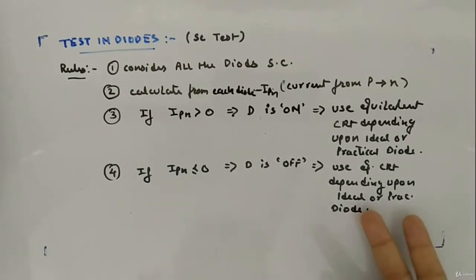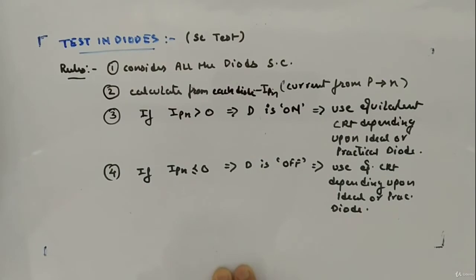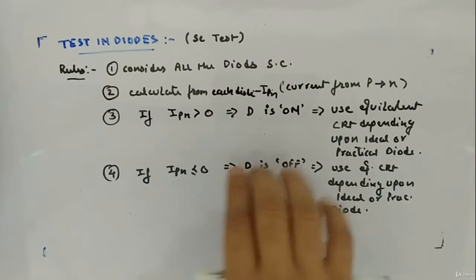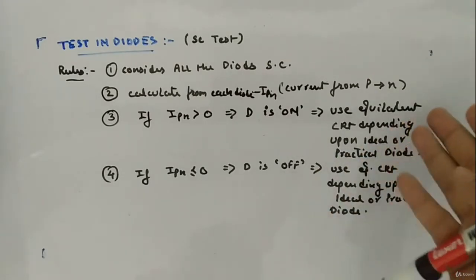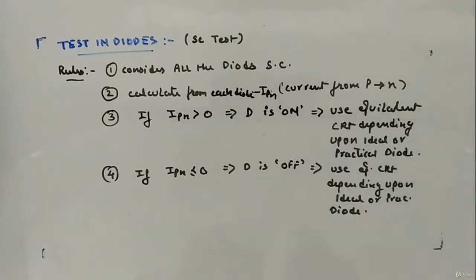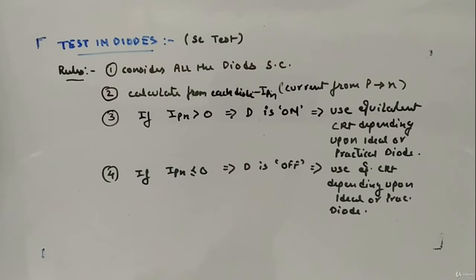If I_PN is less than or equal to 0, the diode is off, and you use the equivalent circuit for an off diode, depending on whether it is ideal or practical. So you assume all diodes are short, calculate the current through them — if greater than 0 it is on, else it is off — then solve the circuit using the equivalent for on and off. We'll see this through an example.